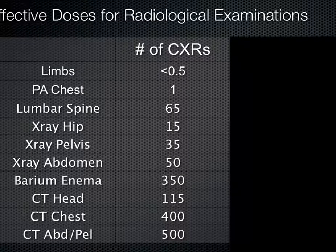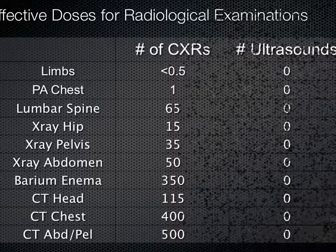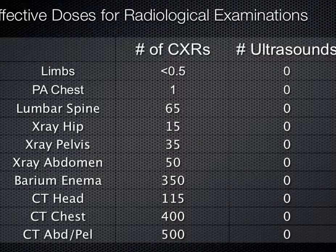Just one more thing about CT scans. Sometimes patients demand a CT scan right now. One way I explain it: a CT scan of your abdomen and pelvis is like getting 500 chest x-rays; a CT scan of your chest is like 400. And if you look up the number of chest x-rays worth of radiation for an ultrasound, it's still zero. Thank you very much.